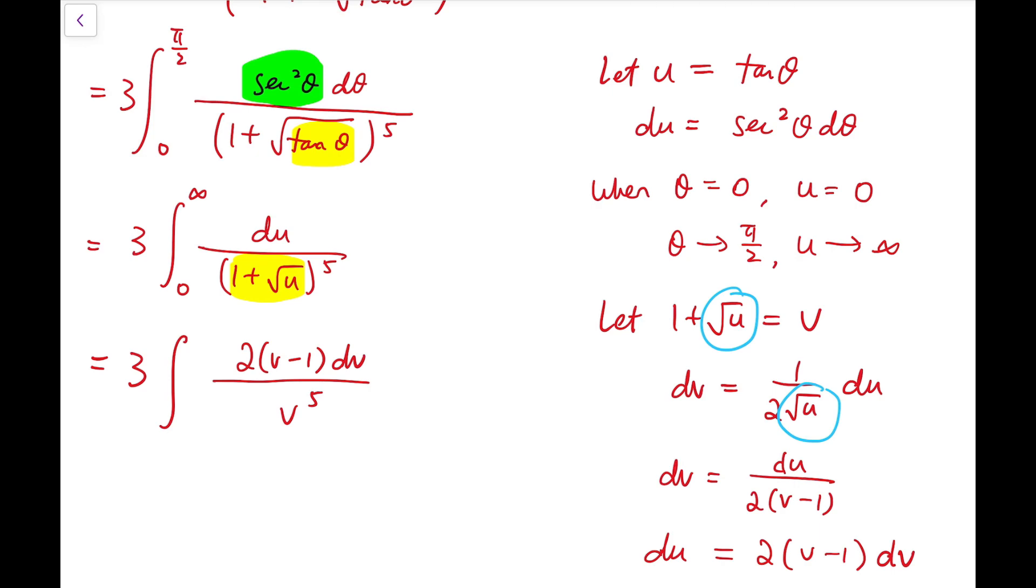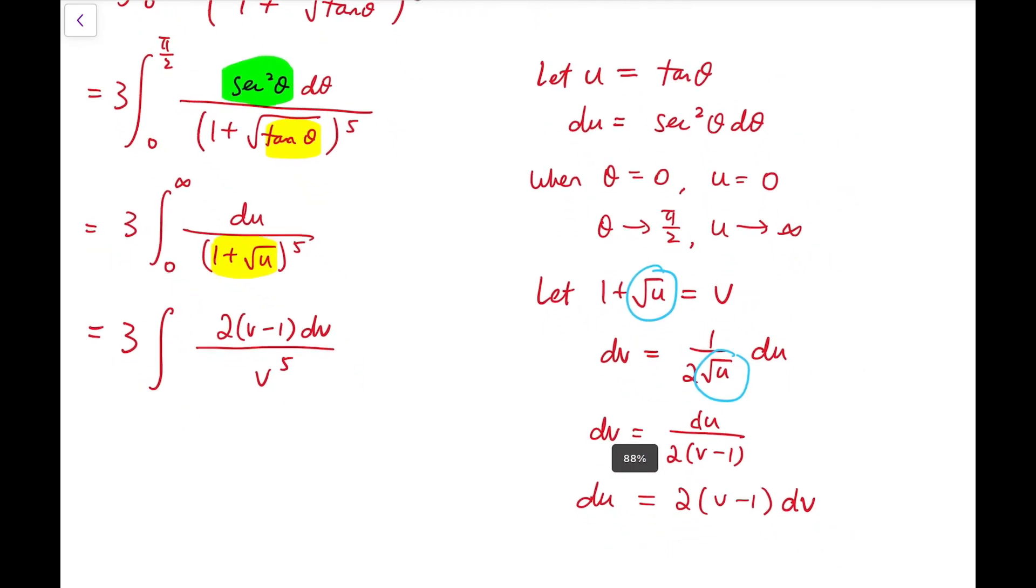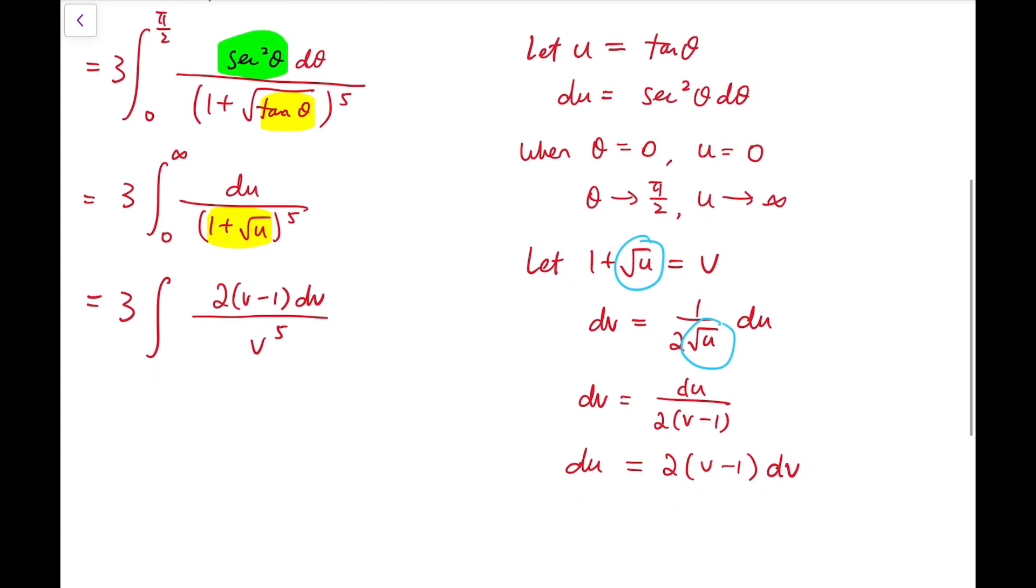So, it becomes 3 times (v - 1) dv over v^5. And also, for the lower and upper limits, when u equals 0, v equals 1. And as u tends to infinity, of course, v would tend to infinity as well. So, the lower limit becomes 1, while the upper limit remains unchanged.